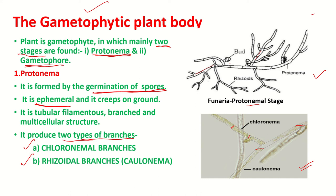When these branches grow for a certain period, they start producing bud-like structures. These buds give rise to the adult gametophyte — the second phase, known as the gametophore. The filamentous protonema consists of a large number of buds, and each bud gives rise to an adult gametophyte. So Funeria plants grow in a close tuft.